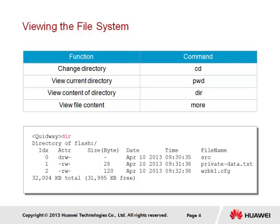The dir command is used to view the content of the current level, and the more command allows the file content to be viewed. We show here the use of the dir command for a user currently at the root level of the flash storage location, through which we are able to identify directories and files within the root level. Here we see a single directory represented by the d value in the attributes list, and two files in the form of a text file and a system configuration file.